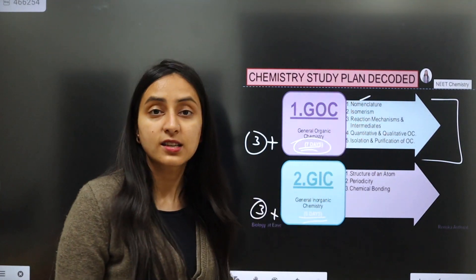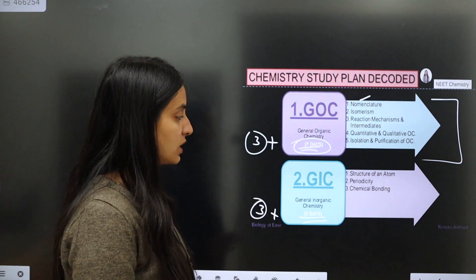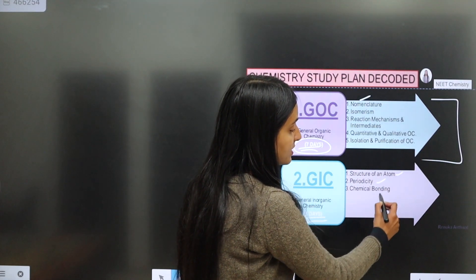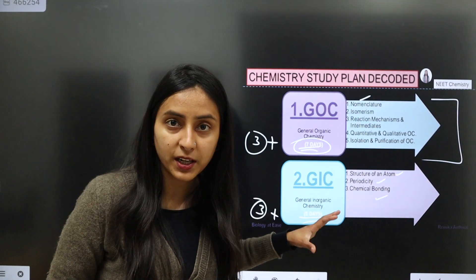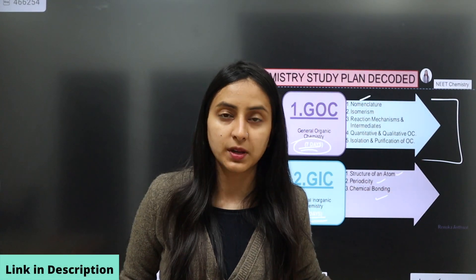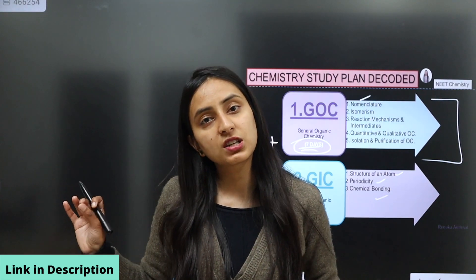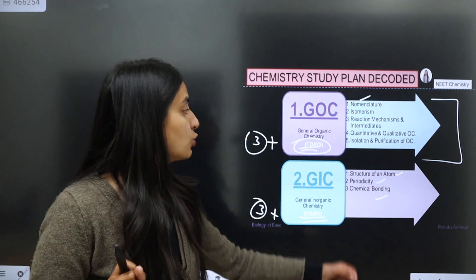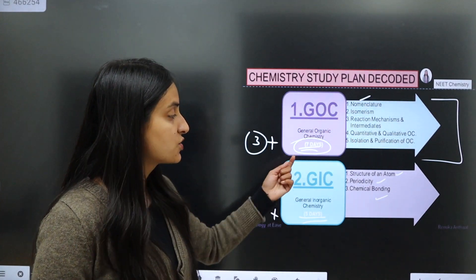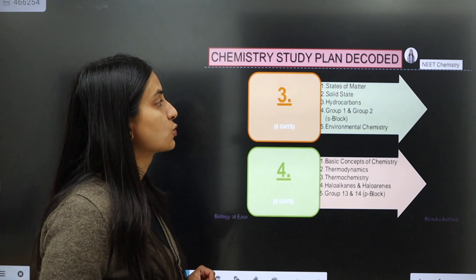In this sequence you will complete general organic chemistry. In the second group, general inorganic chemistry — you will study structure of atom, periodicity, and chemical bonding. Don't worry about writing everything down from the screen; in the next 24 hours you will have the entire PDF on my Telegram channel — the link is in the description. So: 7 days for general organic chemistry, next 5 days for general inorganic chemistry.